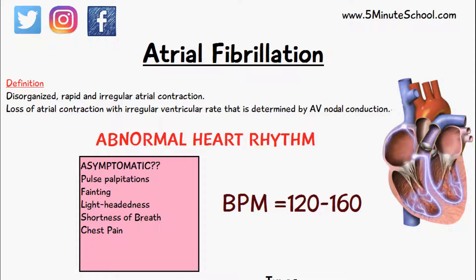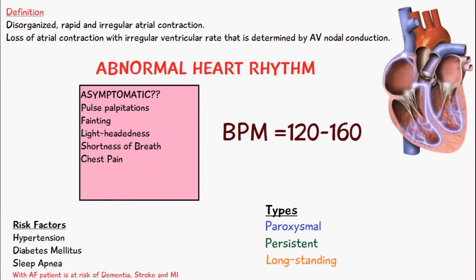Now we need to think about why this is detrimental to the body. This abnormal atrial contraction affects the amount of blood going into the ventricles and then into the aorta or the pulmonary circulation — essentially affecting the amount of blood leaving the heart. If the atria aren't contracting properly, less blood goes into the ventricles and less blood goes elsewhere in the body.